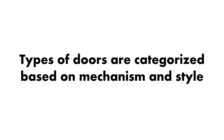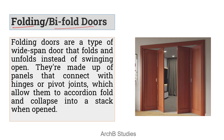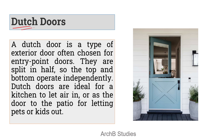The types of doors are categorized based on mechanism and style. First, we have folding or bi-folding doors. As the name suggests, folding means something which folds — the panels fold and stack at the end of the door. The panels are connected with hinges and are installed where the span is too wide. They accordion-fold and collapse into a stack when opened, instead of swinging.